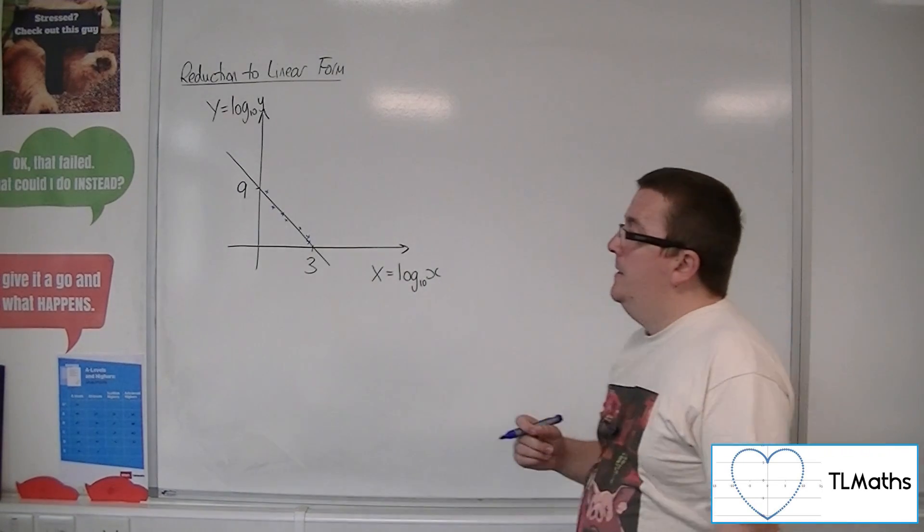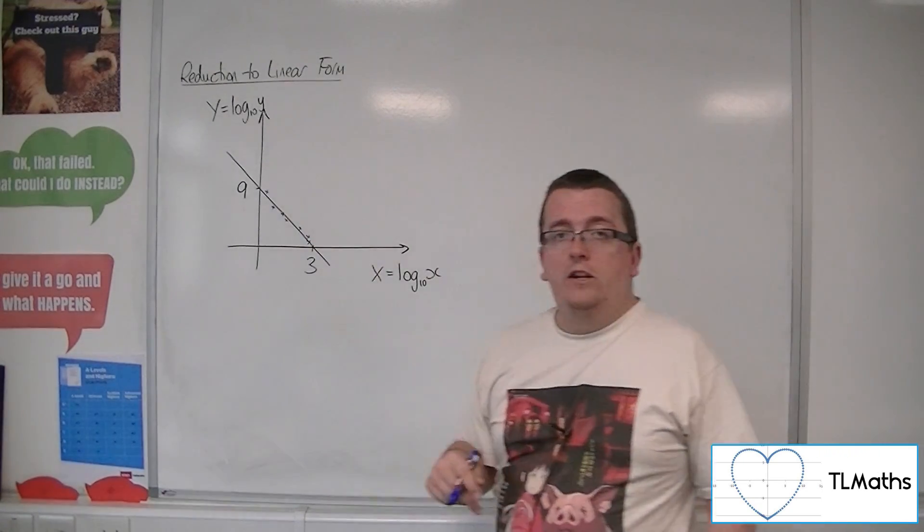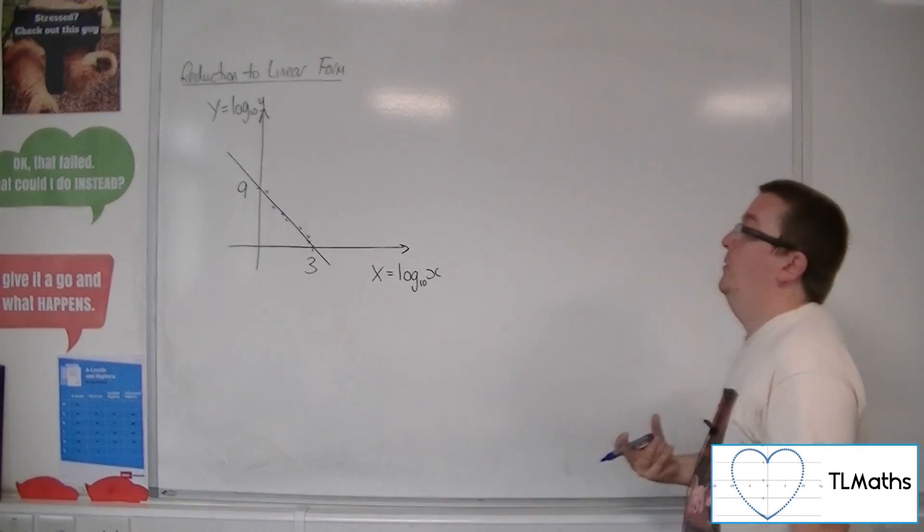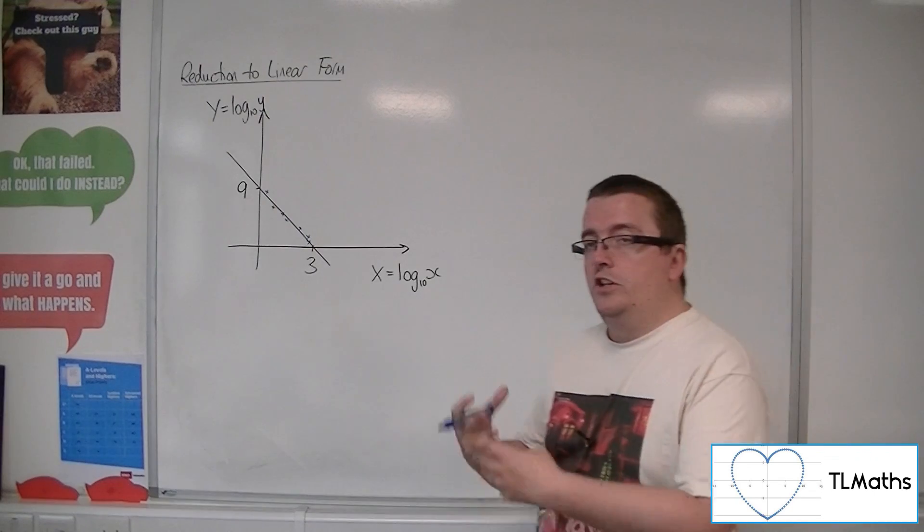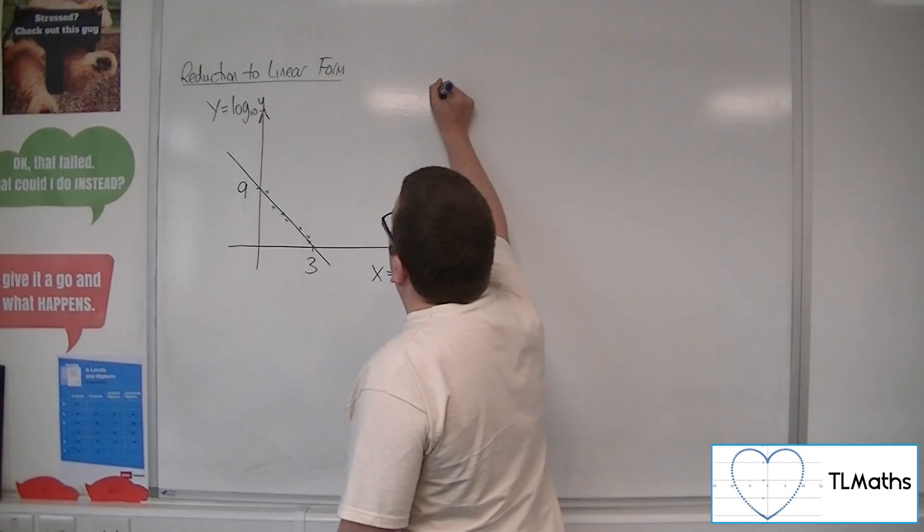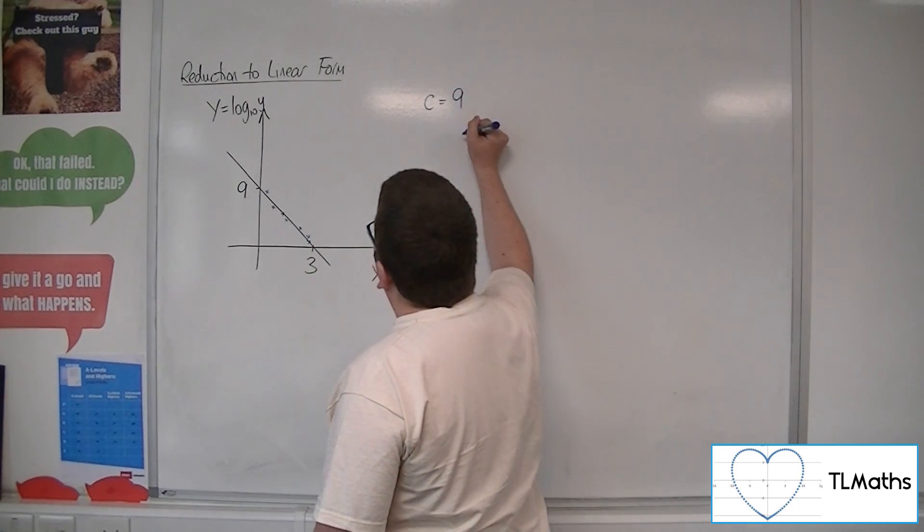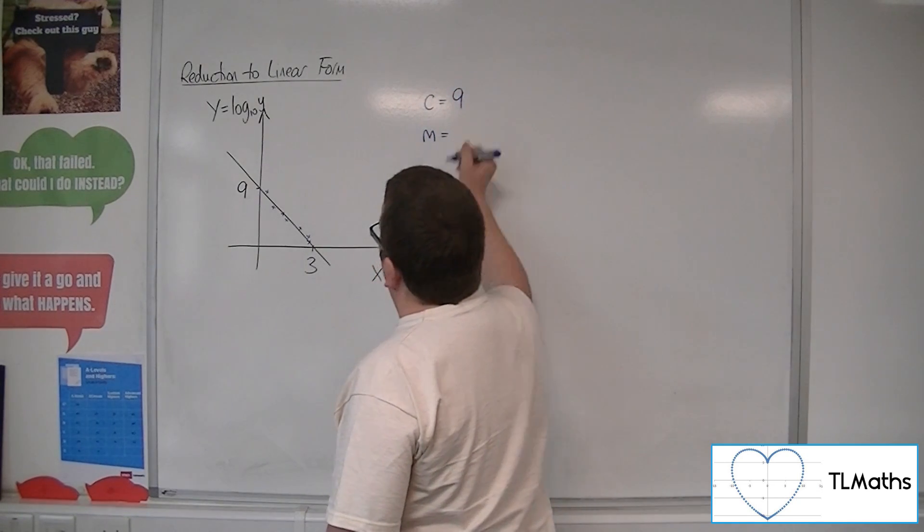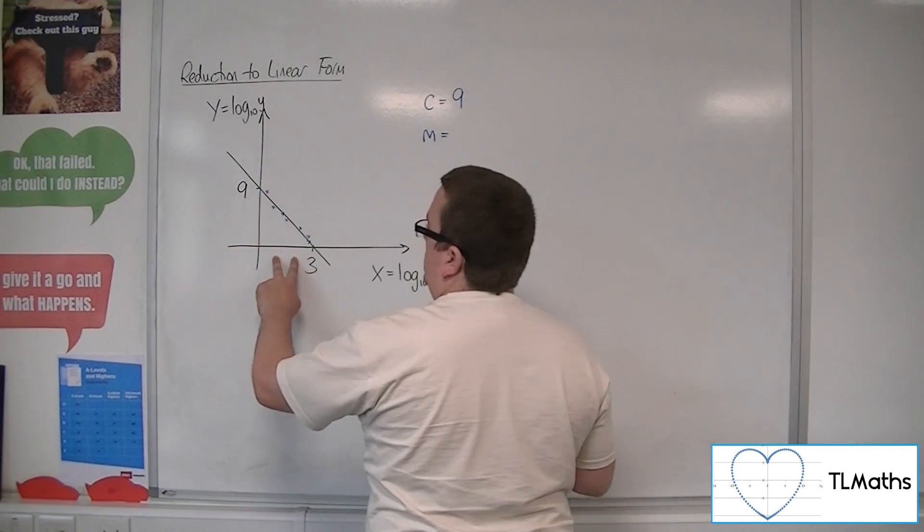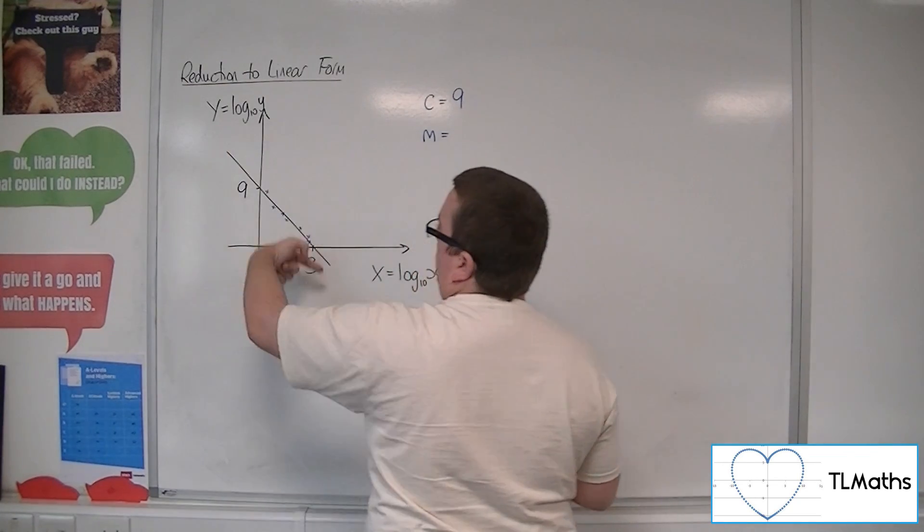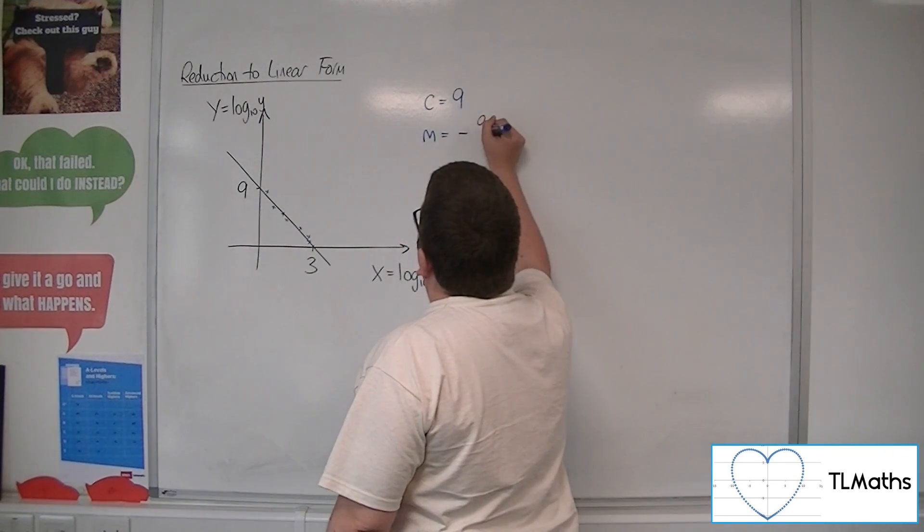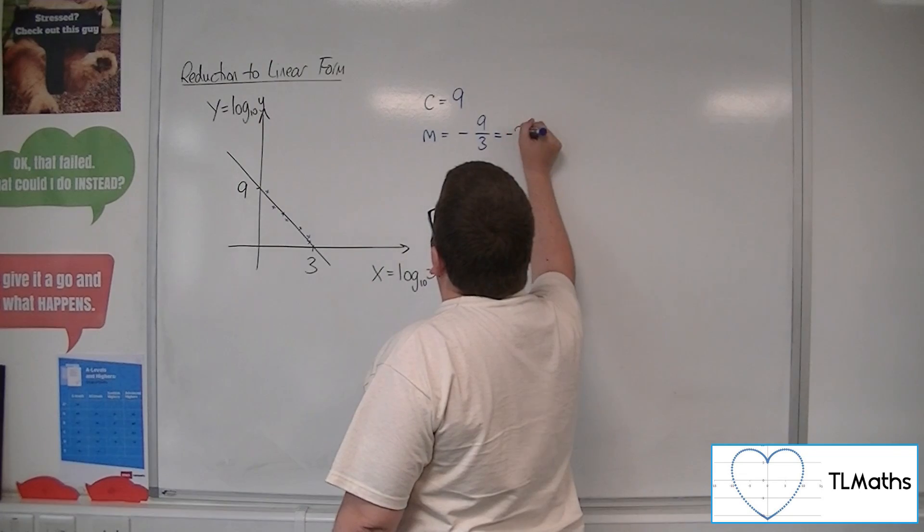And we can see that it's passing through 9 on the capital Y axis, and it's passing through 3 on the capital X axis. So what you can do then is say, the Y-intercept, C, is 9, and the gradient of this line is the difference in the Y divided by the difference in the X. It's going down that way, so we've got minus 9 over 3, which is minus 3.